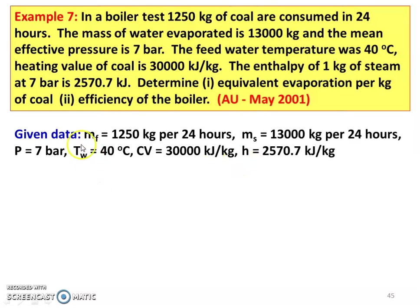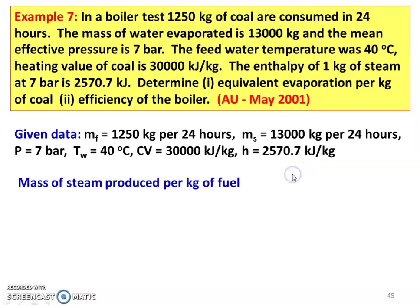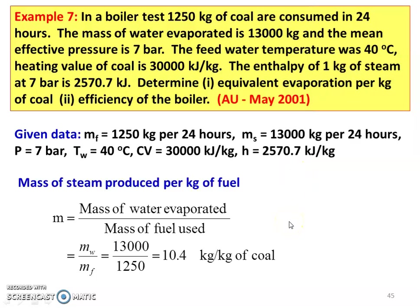The given data: mass of the fuel = 1250 kg per 24 hours, mass of steam = 13,000 kg per 24 hours, pressure = 7 bar, water temperature = 40°C, calorific value = 30,000 kJ/kg, and enthalpy of steam = 2570.7 kJ/kg. Mass of steam produced per kg of fuel: M = mass of water evaporated divided by mass of fuel used = 13,000 divided by 1250 = 10.4 kg per kg of coal.